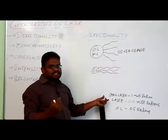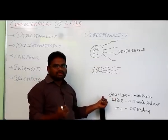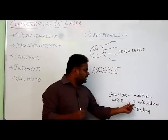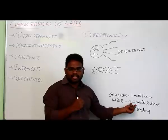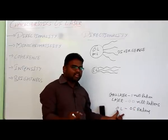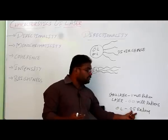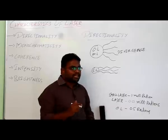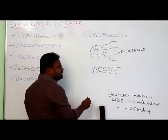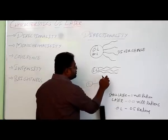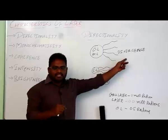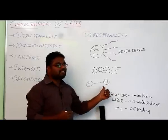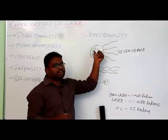For a normally constructed laser, the divergence is about 1 milliradiance. For a very well-constructed laser, the divergence is around 0.01 milliradiance. For ordinary light, divergence is around 0.5 radiance — much higher by comparison. Because of this low divergence, laser light can travel long distances. That's why laser-based communications can travel from Earth to the moon.